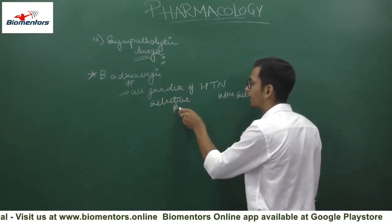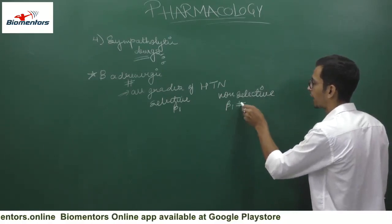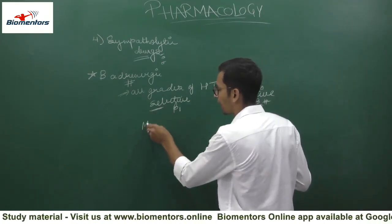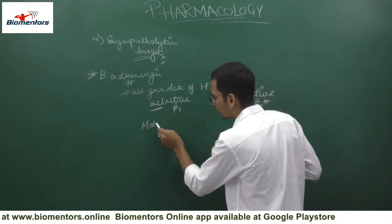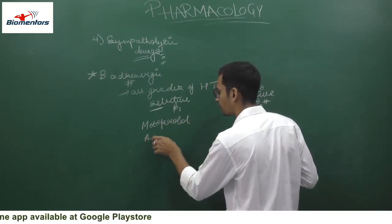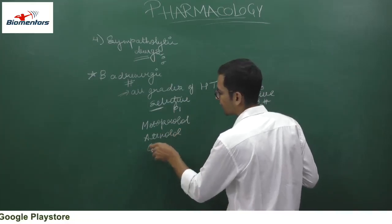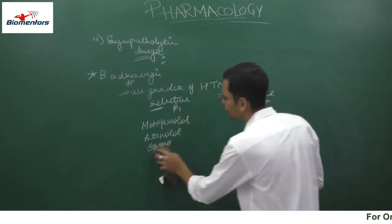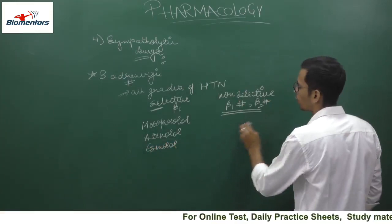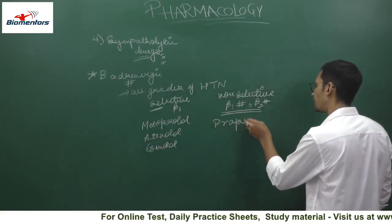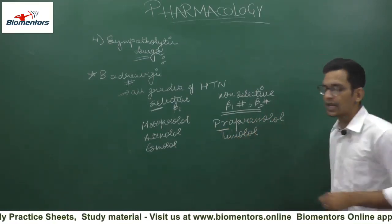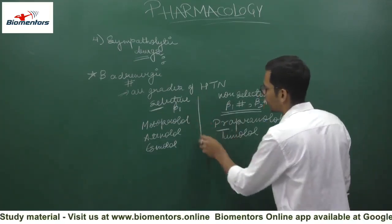In selective beta-1 blockade we have metoprolol, atenolol, and esmolol. In non-selective beta-1 and beta-2 blockade we have propranolol and timolol. These are the drugs under non-selective beta blockade activity.